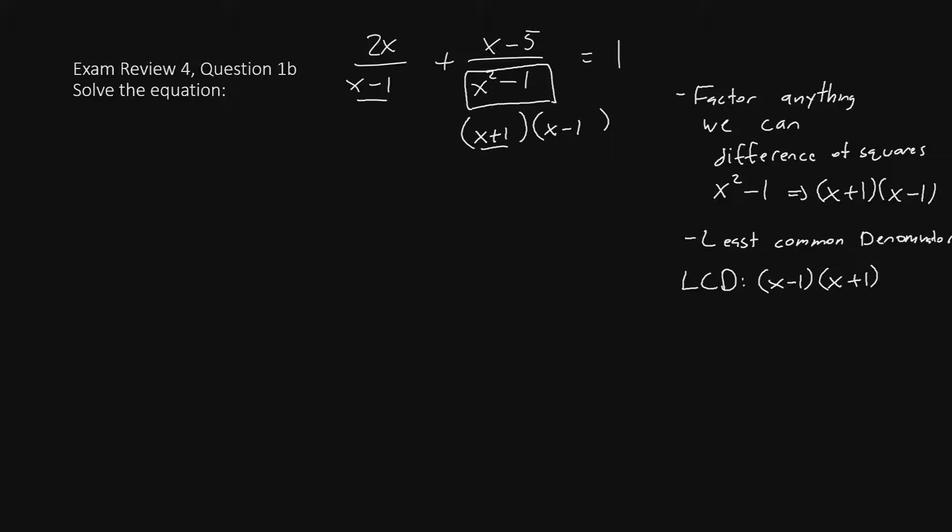Let's first go ahead and rewrite this equation. 2x over x minus 1 plus x minus 5 over x plus 1 x minus 1 equals 1. Since 1 has no denominator, I'm going to put 1 over 1 just so it has some sort of denominator.